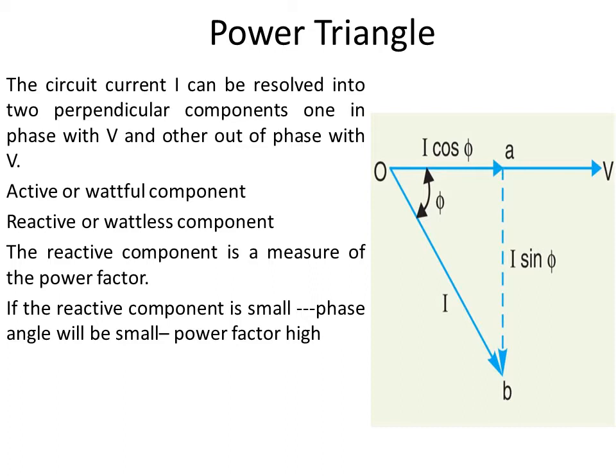Only due to this reactive component I sin phi is there an angle phi. If I sin phi is zero, then phi is also zero, and cos 0 is 1 — so in that case the power factor would be 1. But this is not possible, because the reactive component arises due to inductive or capacitive loads. The reactive component is a measure of the power factor. If the reactive component is small, the phase angle will be small and the power factor will be high.